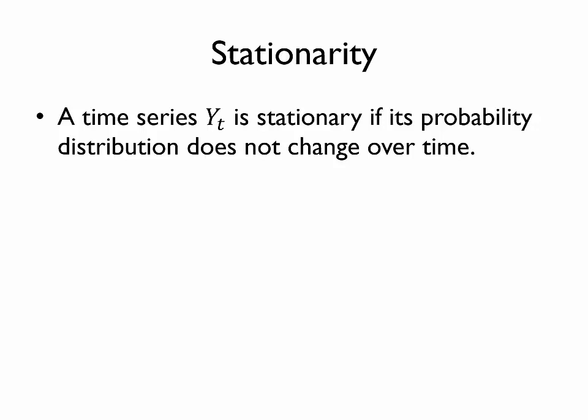Similarly, if asked about the unemployment rate one year ago, we can look it up, but we could imagine many different economic factors went into determining that rate — so we could think of the unemployment rate one year ago as a realized random draw from some distribution. Essentially, asking whether the unemployment rate is stationary is asking whether the probability distribution that last year's unemployment rate was drawn from is the same as the distribution that next year's will be drawn from.